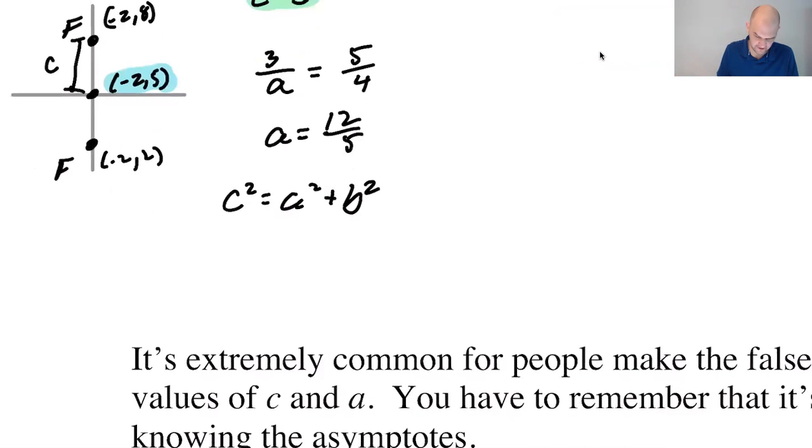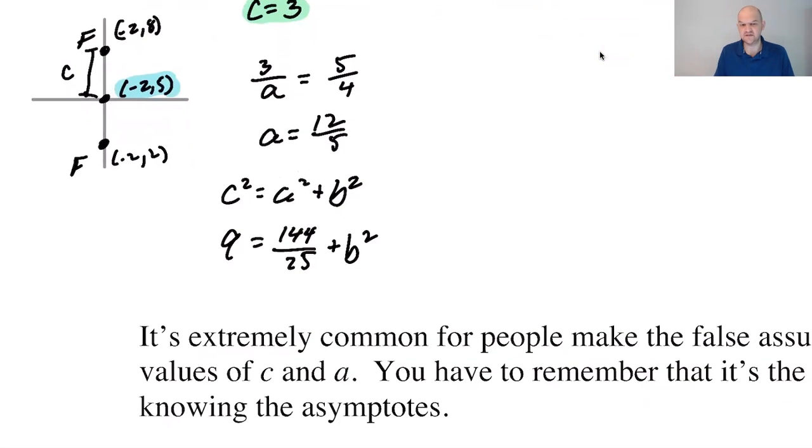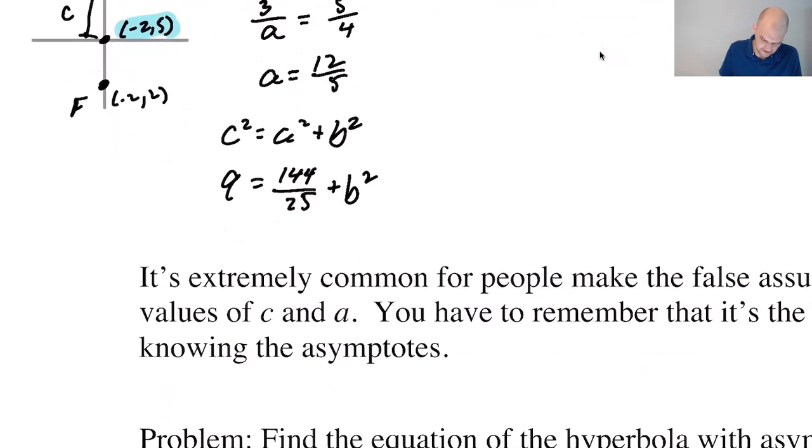So C² is 9 equals 144 over 25 plus B². So what's nice is that we only need B². So we don't have to, it's not like that bad, maybe. So this will be 9 times 25 is 225 and then minus 144 over 25 is equal to B².